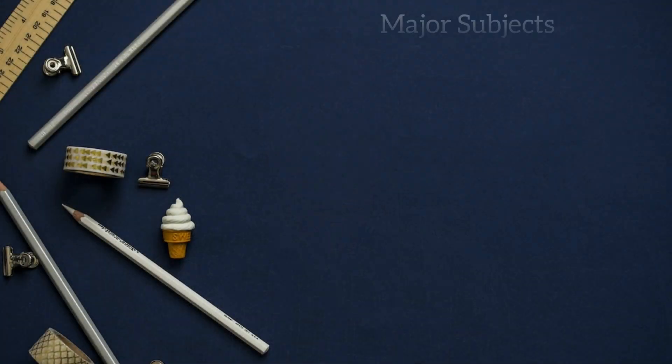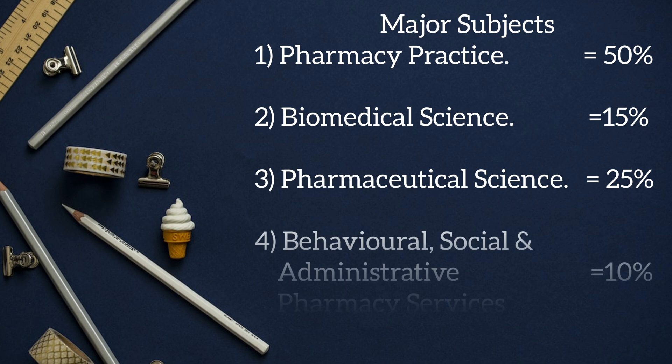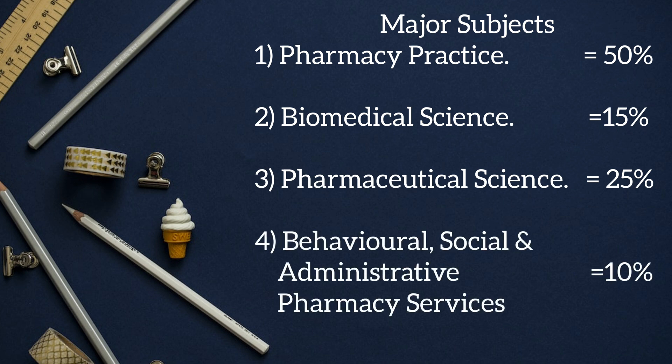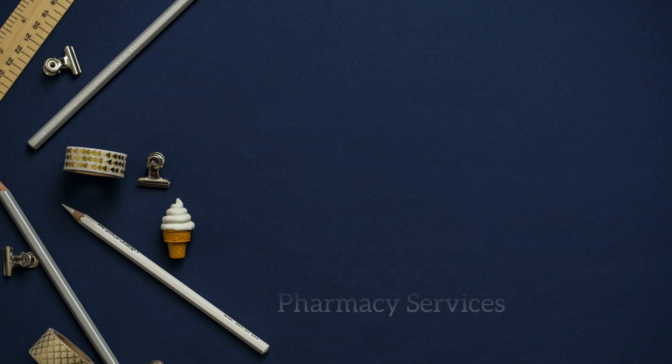The syllabus of this exam is basically divided into four major subjects. First is pharmacy practice, which is a clinically oriented syllabus comprising 50 percent of the whole syllabus, followed by biomedical science, pharmaceutical science, and social behavioral science. These are the four pillars of pharmacy that will be evaluated in the evaluating exam. Once this evaluating exam is cleared, one can register for the qualifying exam.